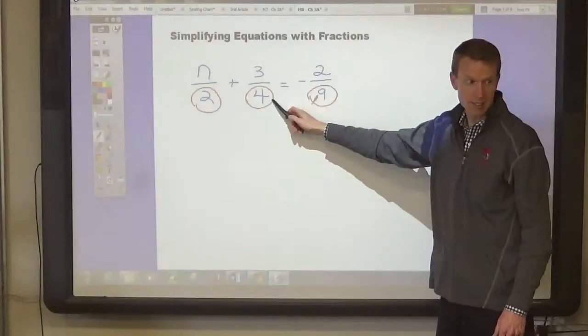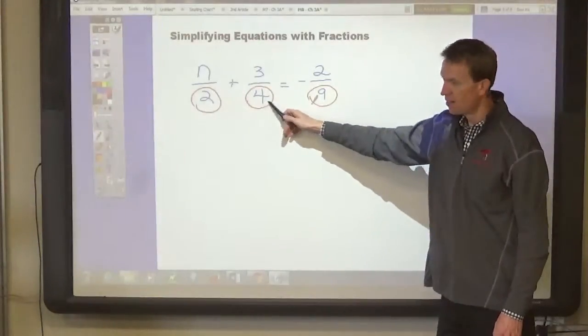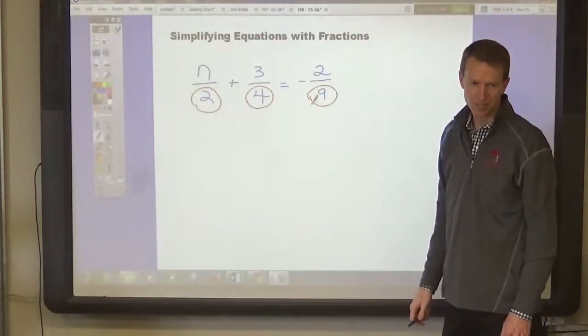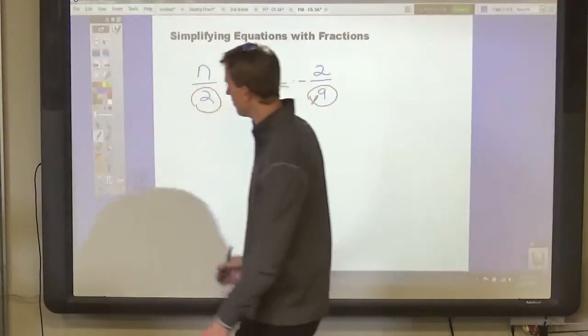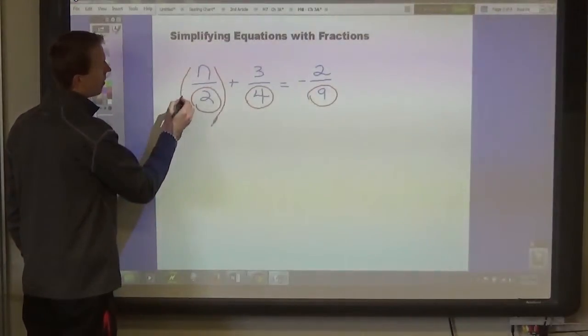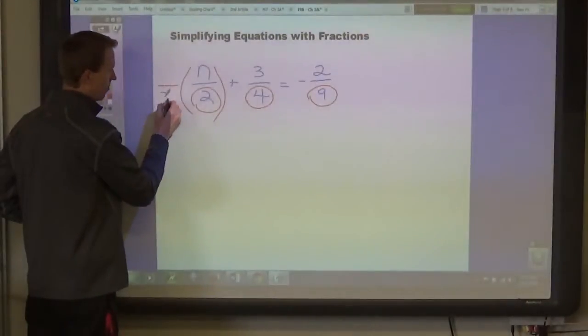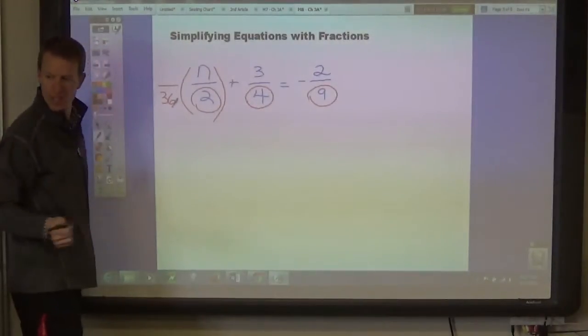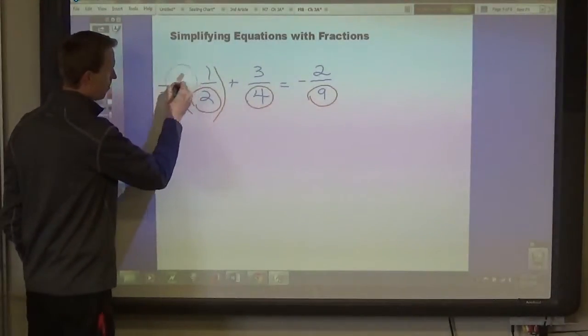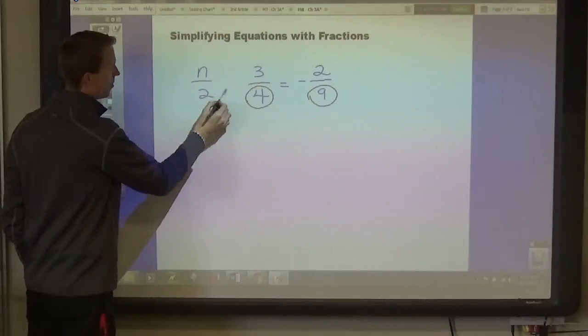Does 4 go into 36? And it goes in 9 times, right? And 9 goes into 36 4 times. So, we're going to change all of these to 36. Even 2? Yeah. Yep. Because we've got to multiply this by, how many times would 2 go into 36? Oh, let's see. 18 times. Good. 18. So, let me get rid of these curves. This is 2. This was N over 2.